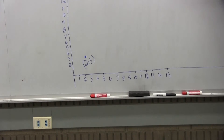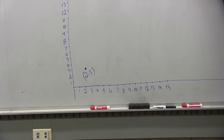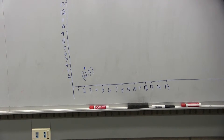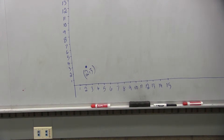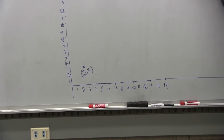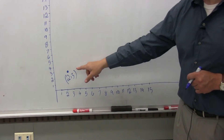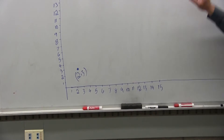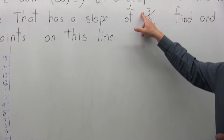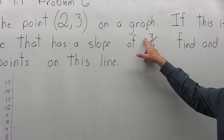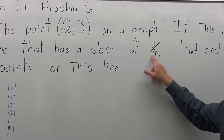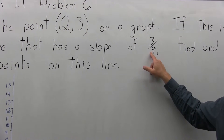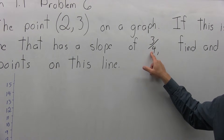Next, the slope is 3 fourths — plot three more points. What the slope of 3 fourths means is: from any starting point on your line, if you go up the value in the numerator (in this case 3) and over the value in the denominator (for this problem 4), you'll get back to the line.